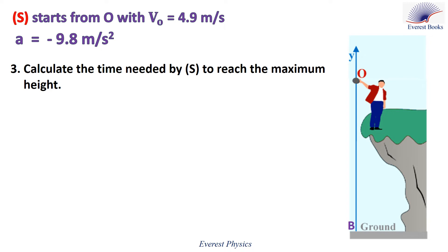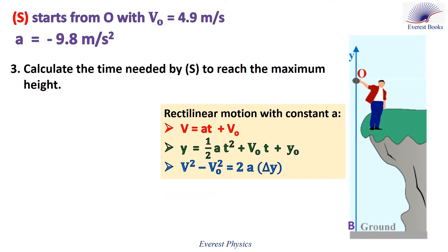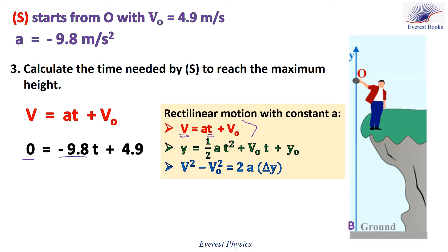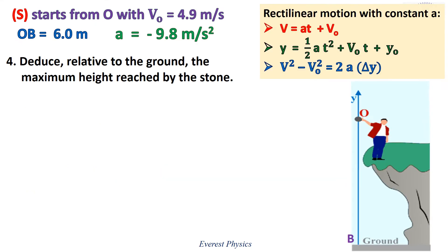Number 3: Calculate the time needed by S to reach the maximum height. Let me remind you of the three basic equations of rectilinear motion with constant acceleration. The value of the velocity at the maximum height is 0 and we want to calculate the time, so let's use the first equation. Replace V by 0, A by minus 9.8 meters per second squared, and V₀ by 4.9 meters per second. Then the time needed by S to reach the maximum height is 0.5 seconds.